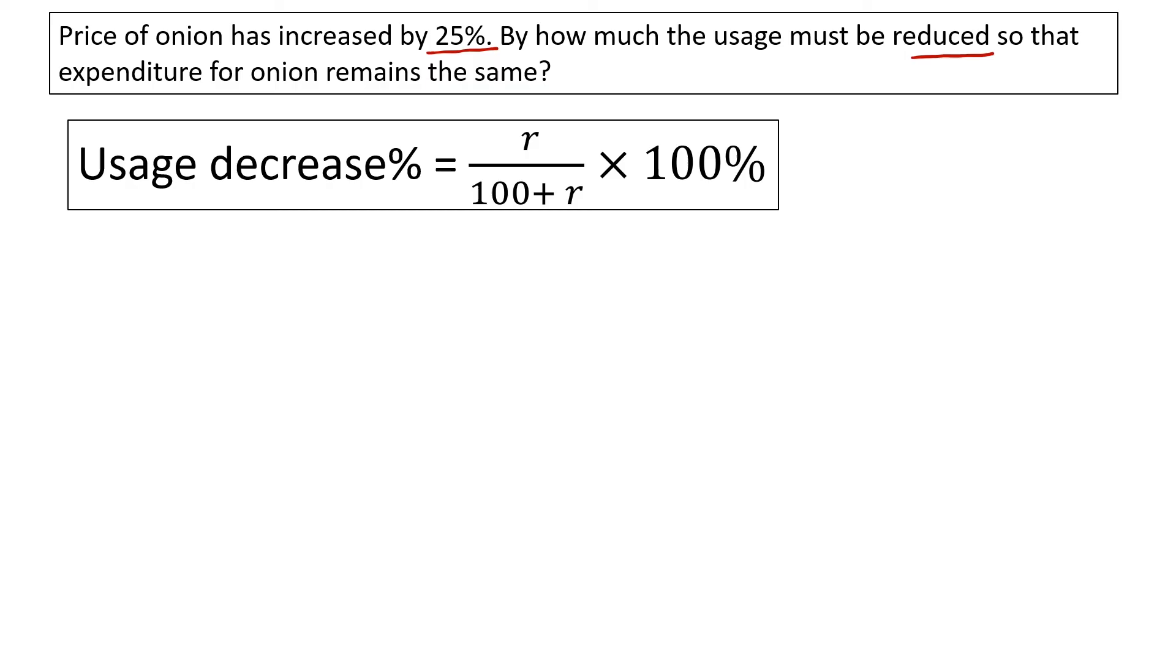The price will increase by 25 percent. So onion usage must be reduced to keep expenditure the same. The usage must decrease. If we calculate the value, it comes to 20 percent. The usage must be reduced by 20 percent to maintain the same expenditure.